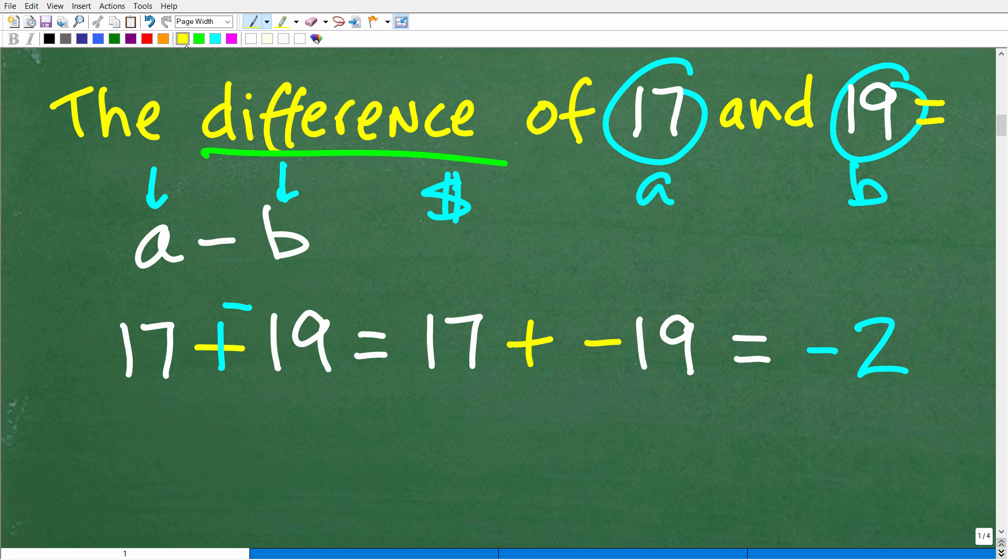As a matter of fact, let's go ahead and take a look at the rest of these words that are associated with these basic math operations, which would include sum, product, and quotient. So we'll take a look at that right now.